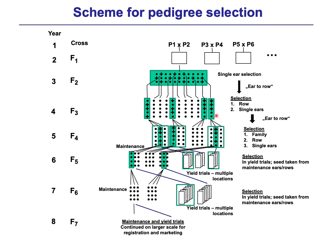One ear is one row in the F3 generation. In the F3 generation we then select in two steps: first we select between the different rows — the green rows are taken for the next generation — and in the second step, inside the row, we select the best ears. In our example we take three ears and put them in the next generation.